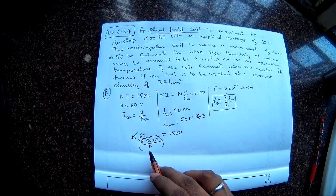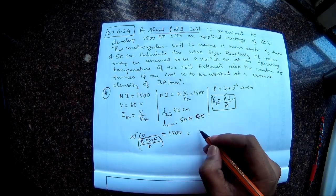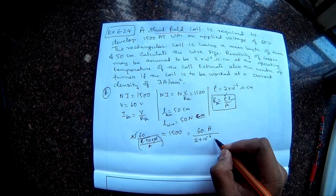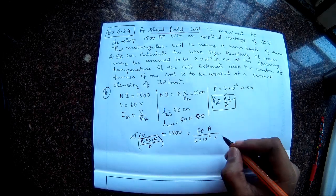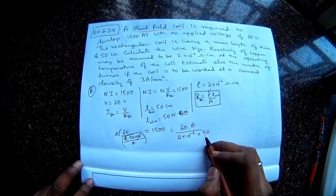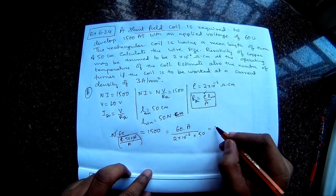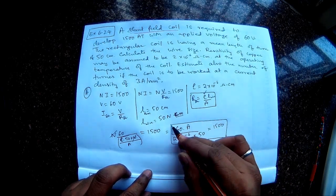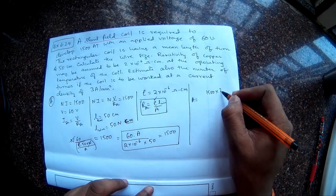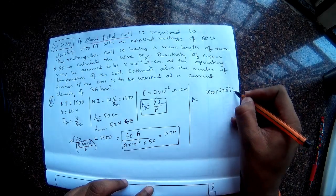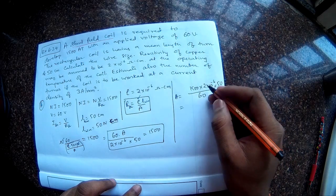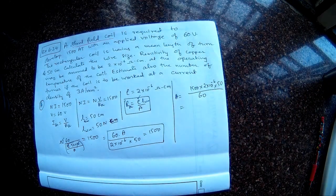So this A from the lowest denominator will go to the top, so I will get 60 into A divided by rho, rho is 2 into 10 power minus 6 ohm centimeter, multiplied by length, length is again 50. This is also in centimeters, so we have taken care of the units, so centimeter centimeter will cancel. So this quantity is nothing but 1500. So from this I can find out what is the A. So let me do the calculation here. So A is nothing but 1500 multiplied by 2 into 10 power minus 6 multiplied by 50, whole divided by 60.